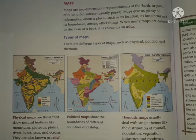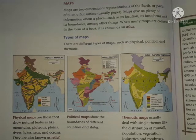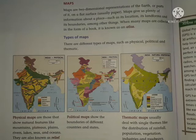Physical maps show natural features like mountains, plateaus, plains, rivers, sea, continents, oceans, etc. Political maps show the boundaries of countries and states. Thematic maps usually show a single theme like population, vegetation, industries, roadways, rainfall, etc.